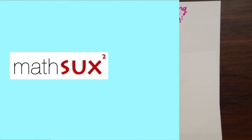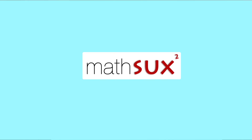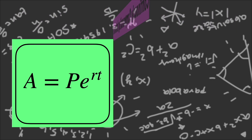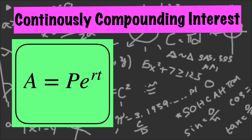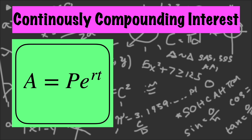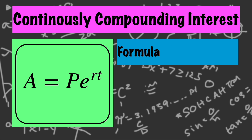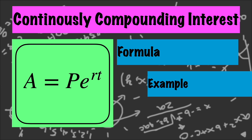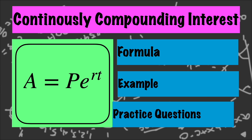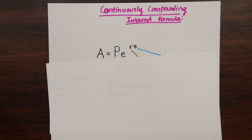Hi everyone and welcome to Math Sucks. This video is going to help you pass algebra. In this video we're going to go over the continuously compounding interest formula, first by looking at each part of the formula, solving an example, and then we're going to try some practice questions at the end on your own.